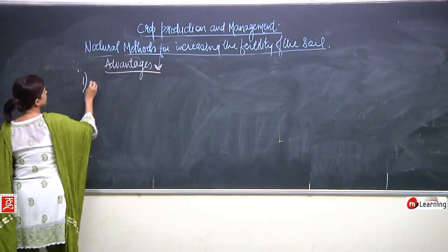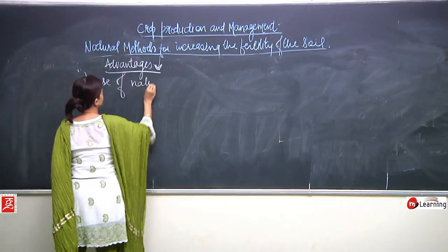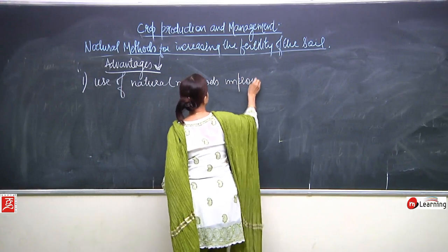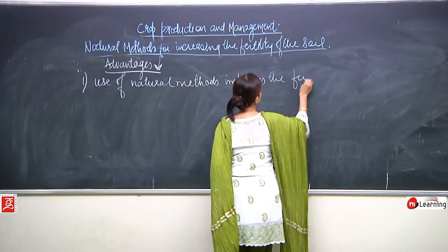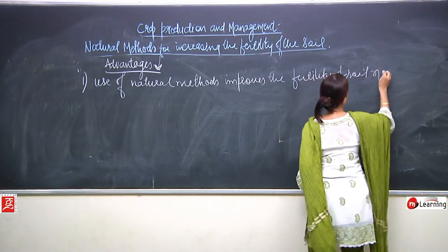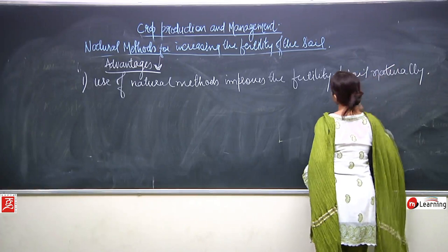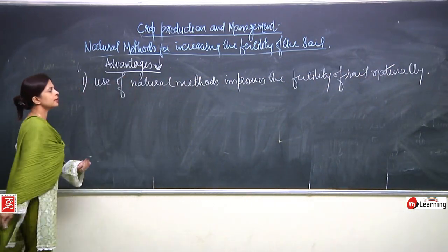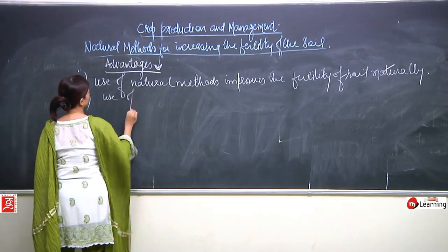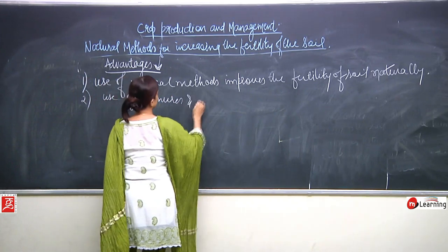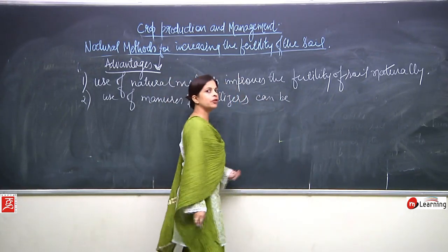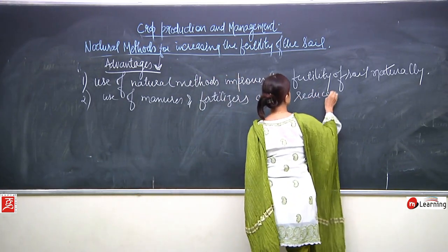The use of natural methods improves the fertility of the soil naturally. That means the use of manures and fertilizers can be reduced.